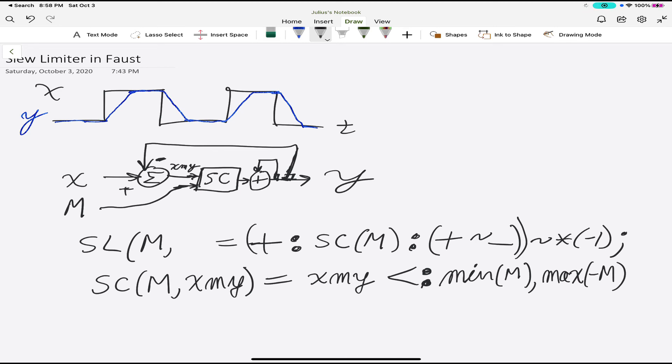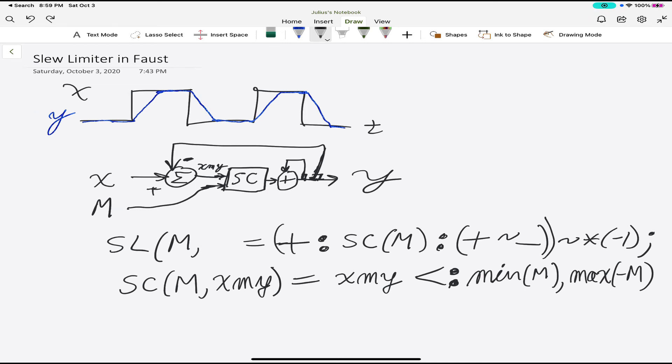And now we have two signals that we have to select based on the sign of X minus Y. And that's where we really needed the name, all right? So now we have two signals coming in to the next stage, which will then be a select two.